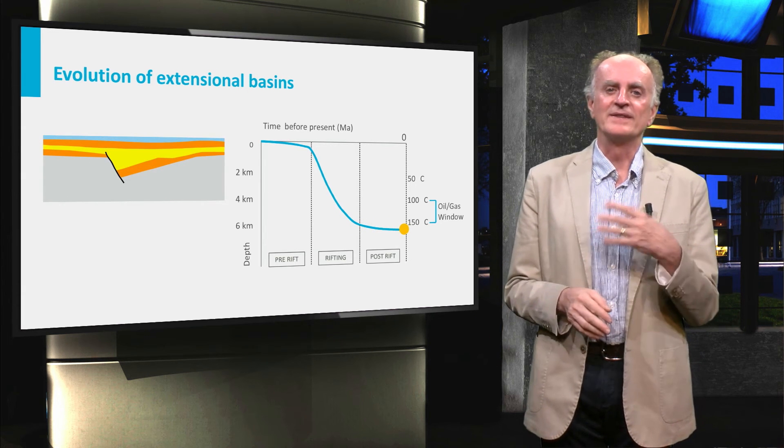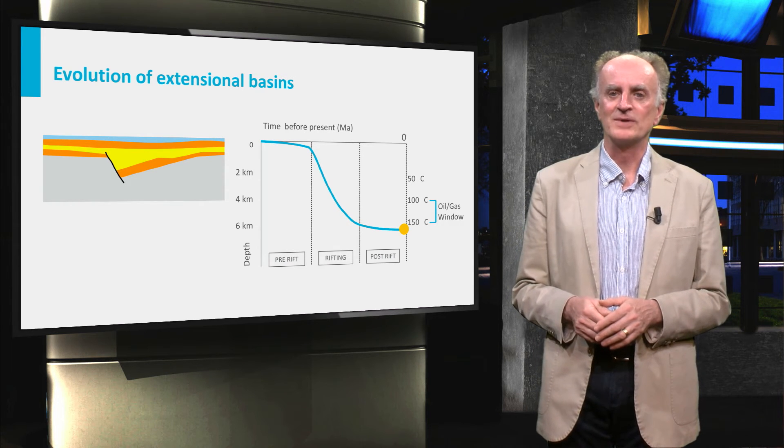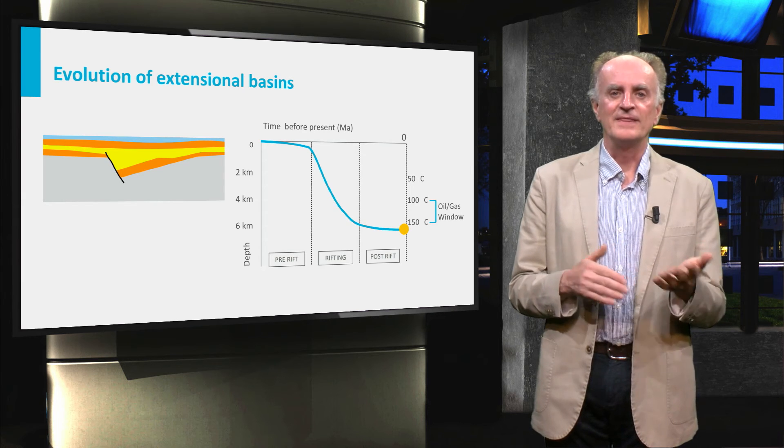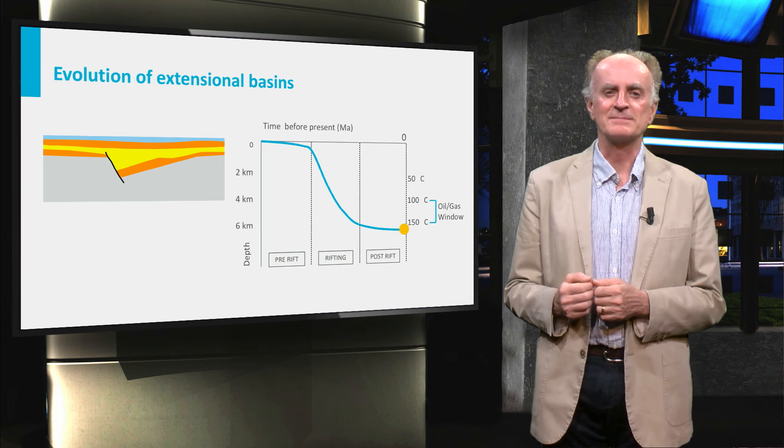Following rifting, we enter the post-drift stage, when subsidence is controlled by lithospheric cooling. We have seen that the faster the rift, the higher the thermal anomaly and the stronger the post-drift thermal subsidence will be.